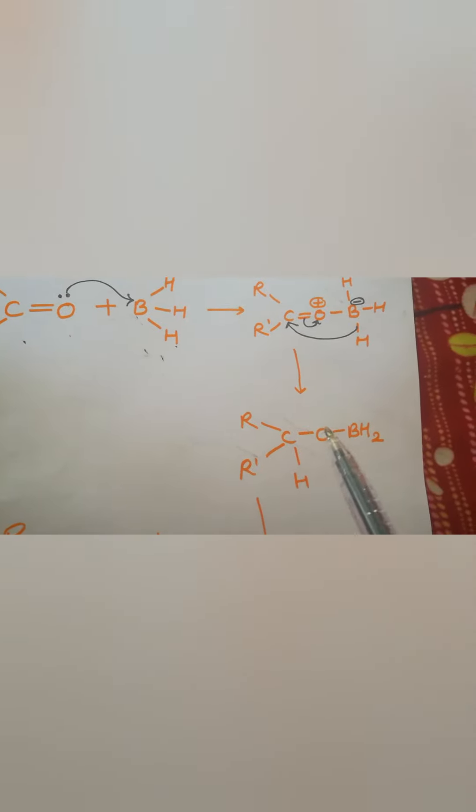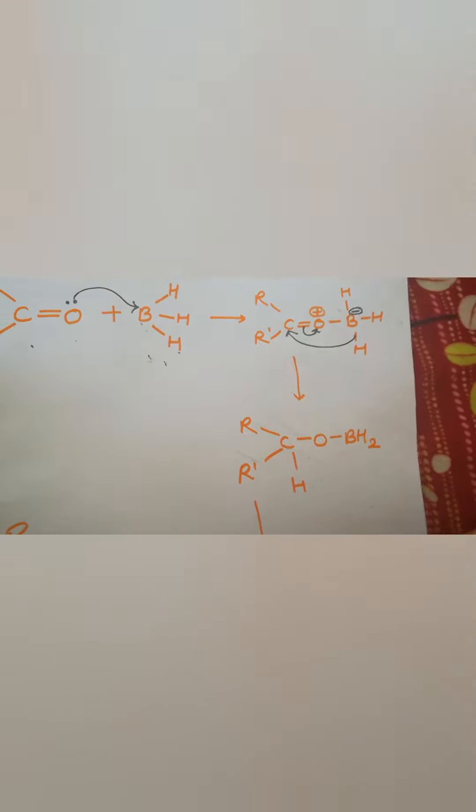Therefore, we see in the next step how the bond is formed. See, single bond O and BH2. And then on hydrolysis, we get a secondary alcohol as a product.